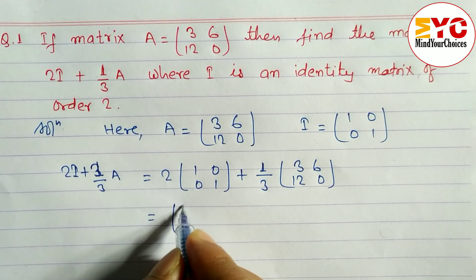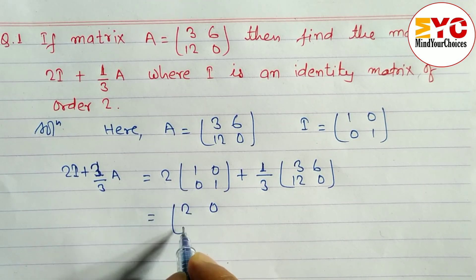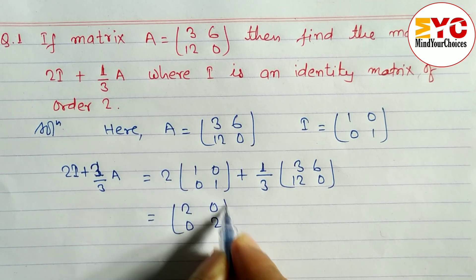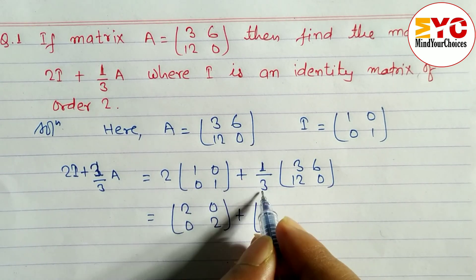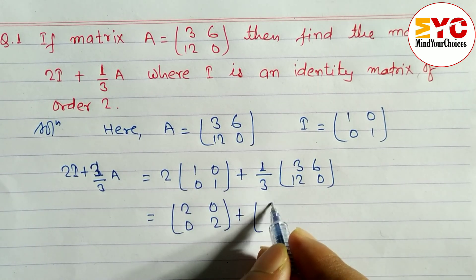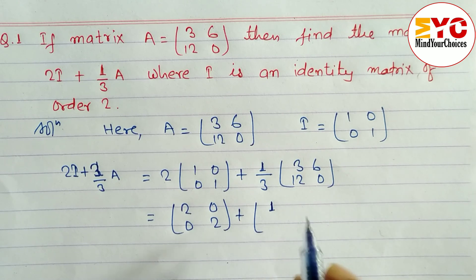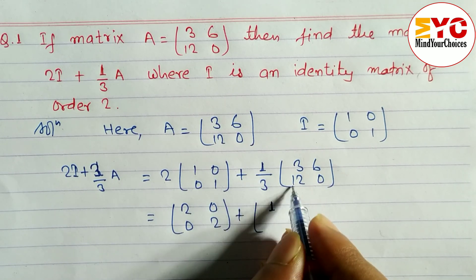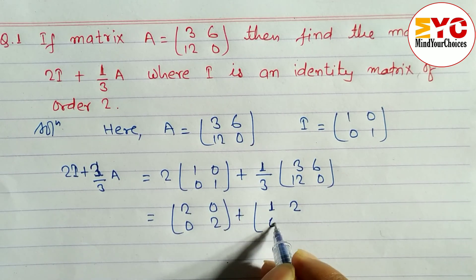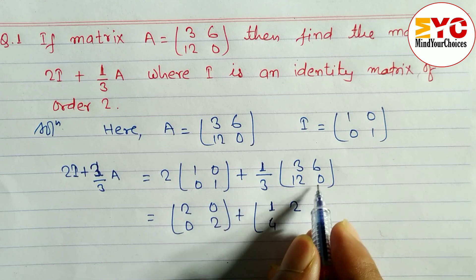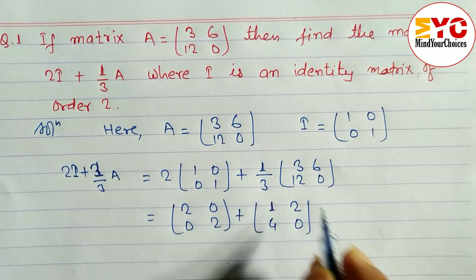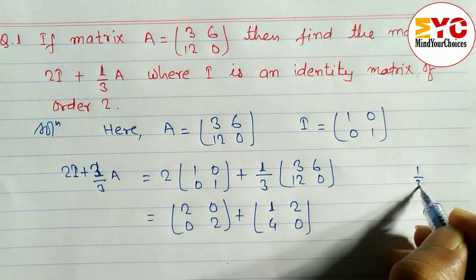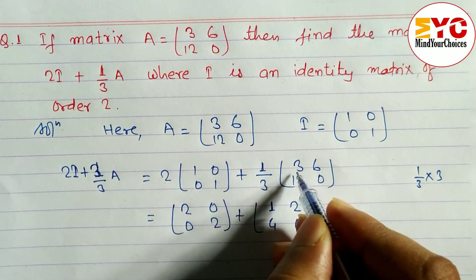Multiplying 2 into the identity matrix gives [[2, 0], [0, 2]]. Multiplying (1/3) into matrix A: (1/3)×3 = 1, (1/3)×6 = 2, (1/3)×12 = 4, (1/3)×0 = 0. So (1/3)A = [[1, 2], [4, 0]].